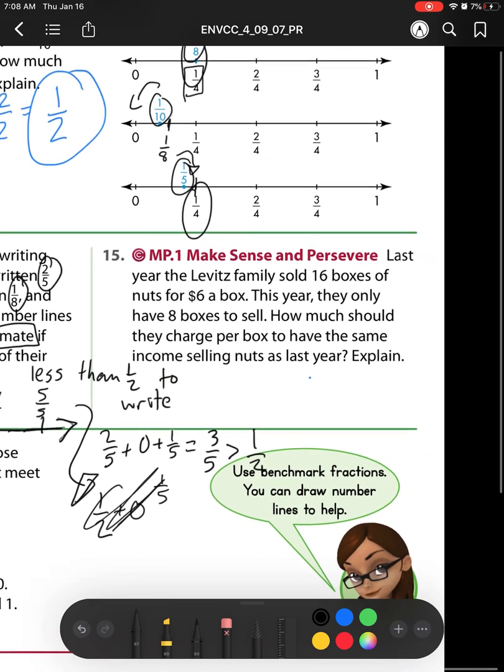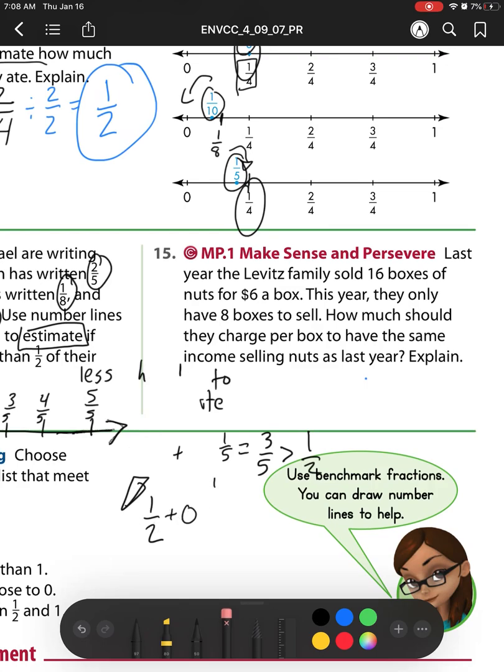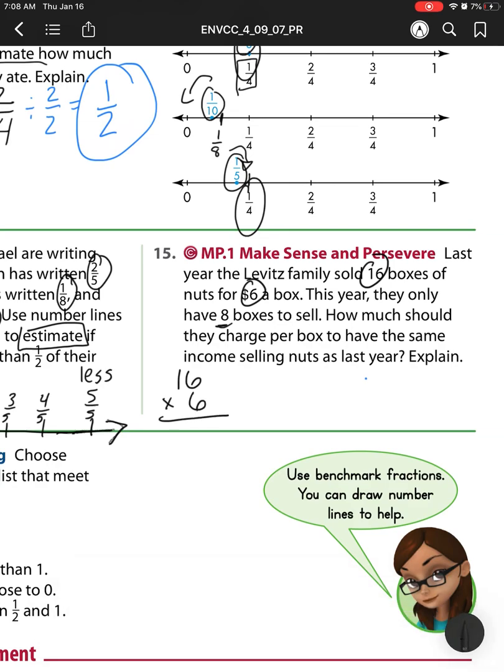Let's move on to number 15, and I'm going to erase my work here just so we have some more space. For number 15, last year the Levitz family sold 16 boxes of nuts for $6 a box. This year they only have 8 boxes to sell. How much do they charge per box to have the same income selling nuts as last year? Well first, I need to figure out how much they earned last year. So last year they sold 16 boxes, each box was 6, so I'm making groups of 6. So I have 36, regroup. 6 times 1 is 6, plus 3 is 9. So last year they earned $96.